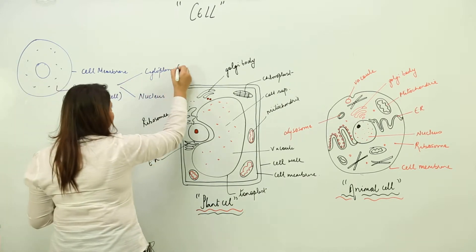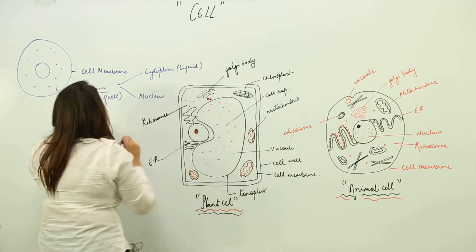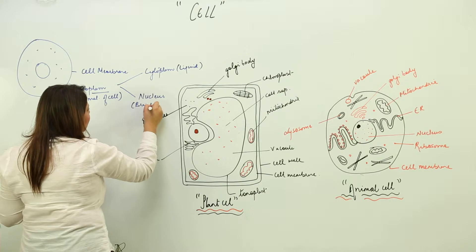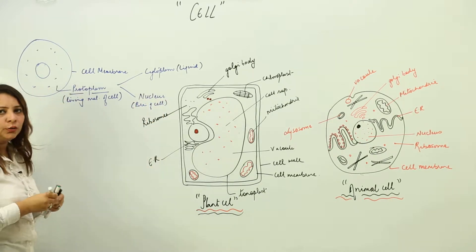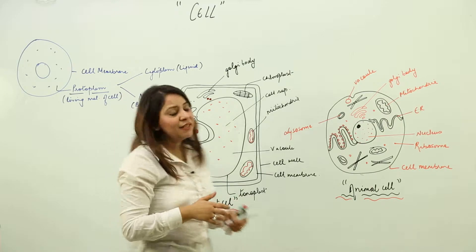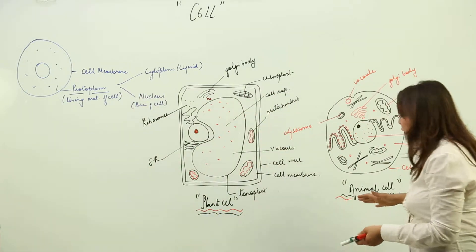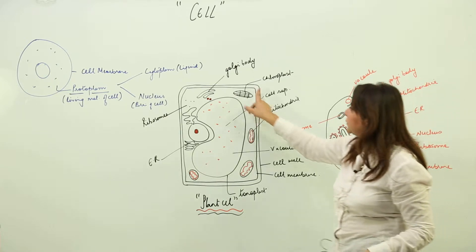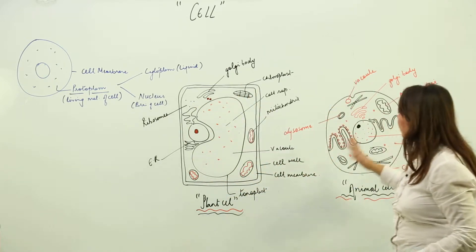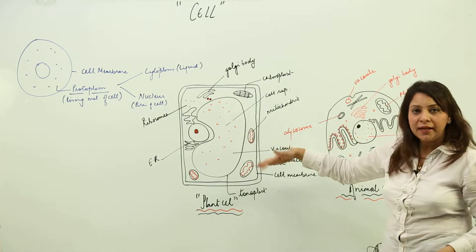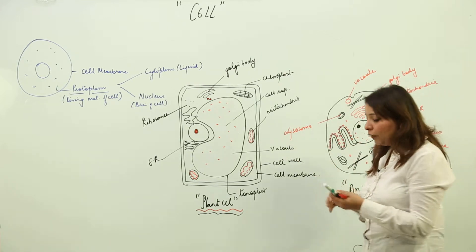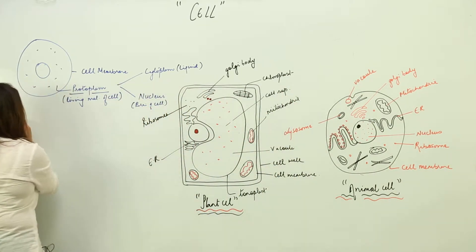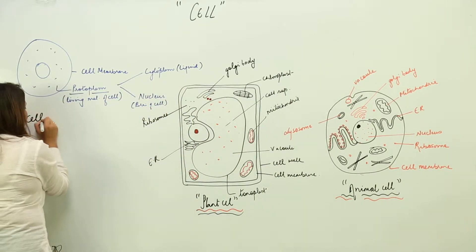Both plant and animal cells contain the cell membrane as the outer layer, and whatever is inside the cell is the protoplasm. So we are going to study the components one by one, starting with the first component: the cell membrane.